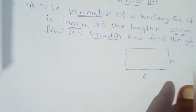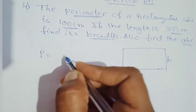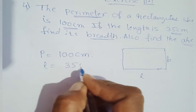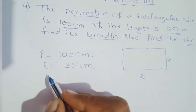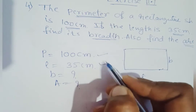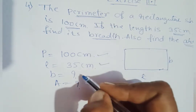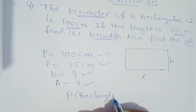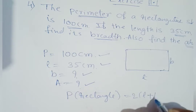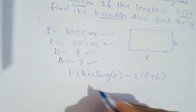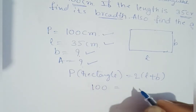We know the formula for perimeter. We are given: perimeter = 100 centimeters, length = 35 centimeters. We need to find breadth (b) and area. We will use the perimeter formula. The perimeter of a rectangle is equal to 2 into (l + b). Now put the values: 100 = 2 into (35 + b).